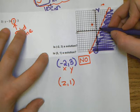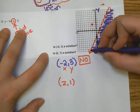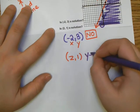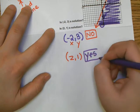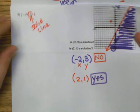Let's check the point 2, 1. Going over to 2 and up 1, it's not in the shaded region — it's on the line. But because the line is solid, the point 2, 1 is a solution.